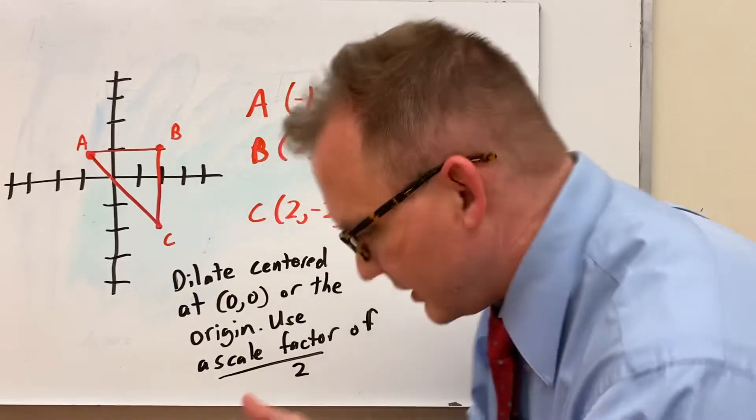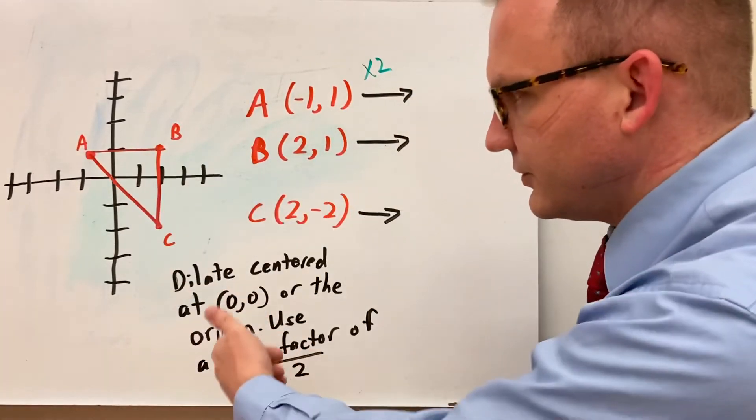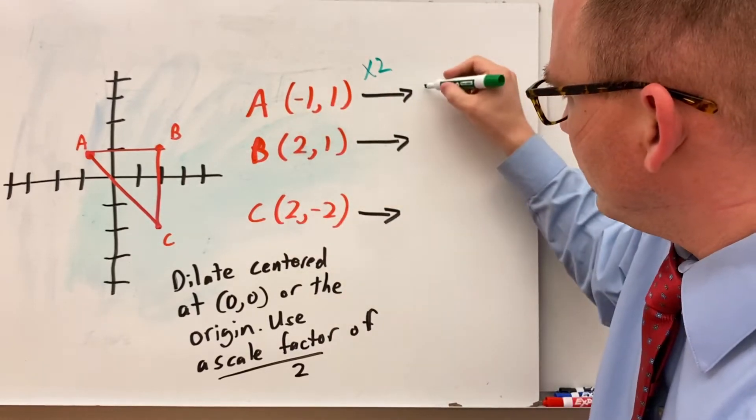You can just take your original coordinates like we have an ABC here and use a scale factor of 2 you just multiply everything by 2. So if I have a scale factor of 2 and I'm dilating this triangle starting at the origin I would do A would just multiply all my coordinates by 2.